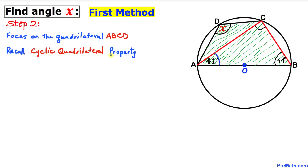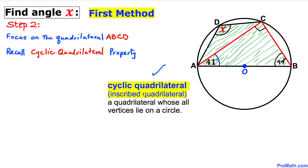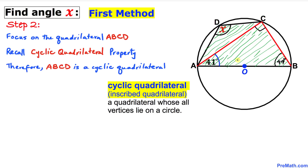In the next step, let's focus on quadrilateral ABCD and recall the cyclic quadrilateral property. A cyclic quadrilateral — sometimes called an inscribed quadrilateral — is a quadrilateral whose all four vertices lie on a circle. In our example, all vertices A, B, C, and D lie on this circle, so ABCD is a cyclic quadrilateral.